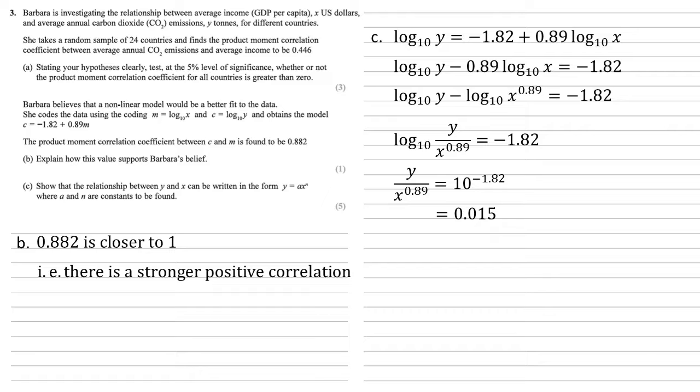10 to the power of minus 1.82 equals 0.015 to three decimal places. And then multiplying both sides by the x to the 0.89 gives us that y equals 0.015 times x to the 0.89, which is in the form that we required.